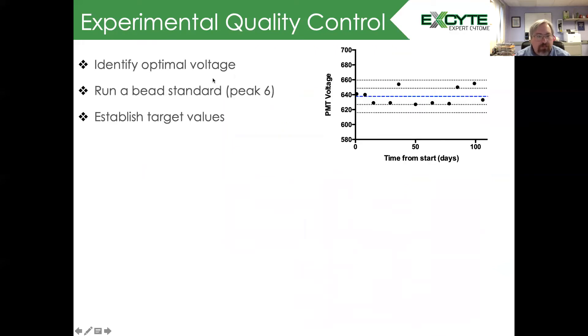It's important not just to do instrument quality control, but to think about experimental quality control. For example, we can use a peak six bead or any bead that you like that's fluorescent in multiple channels. After you've identified the optimal voltage, every day you sit down to run your experiment, you run that bead standard with the target values.